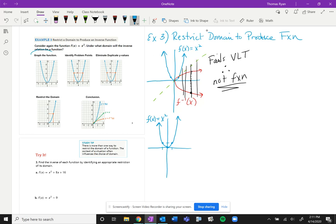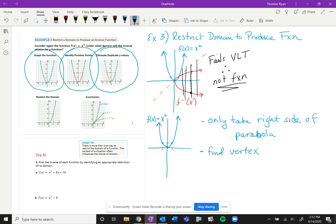If you look over here, we graph the function. There's step one, then we identify what we call these problem points, because we know when we go to turn it on its side those will then duplicate, so we don't want that. So we're going to then eliminate the duplicate y values. Essentially what we're going to do is we are going to only take the right side of the parabola, and we're only going to deal with that right side. Now to figure out where the right side is, that's important, is that we need to find the vertex.